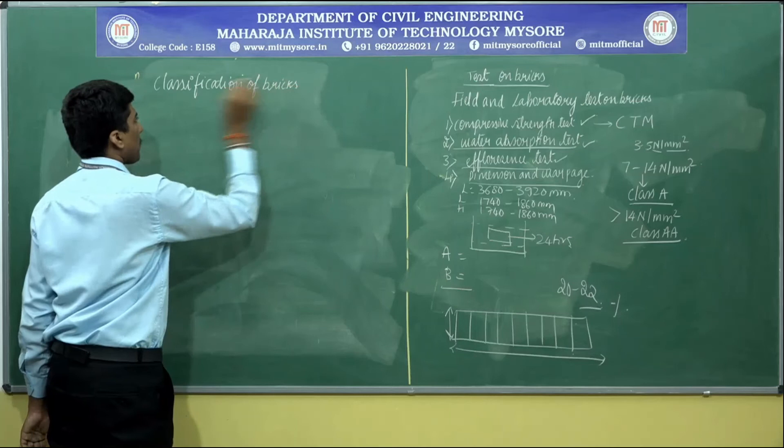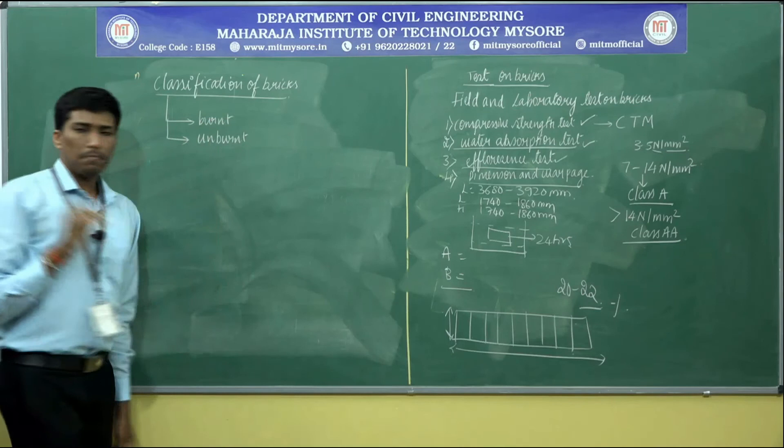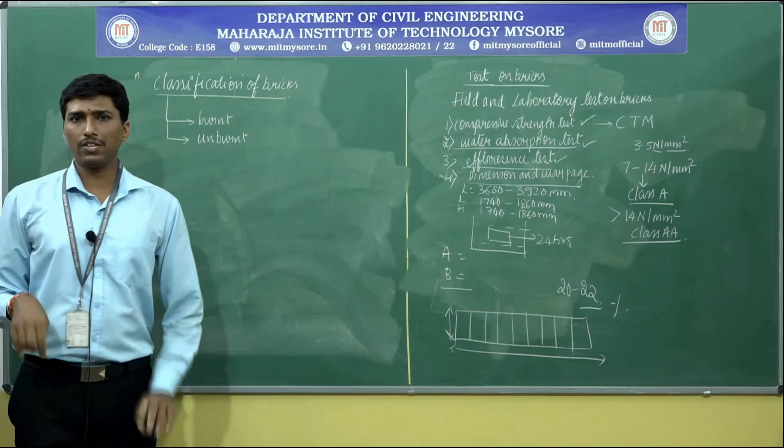Bricks are classified into two main categories: burnt bricks — subjected to the burning process — and unburnt bricks — subjected only up to the drying process, not burnt. Burnt bricks are further classified into four classes: first class, second class, third class, and fourth class bricks.